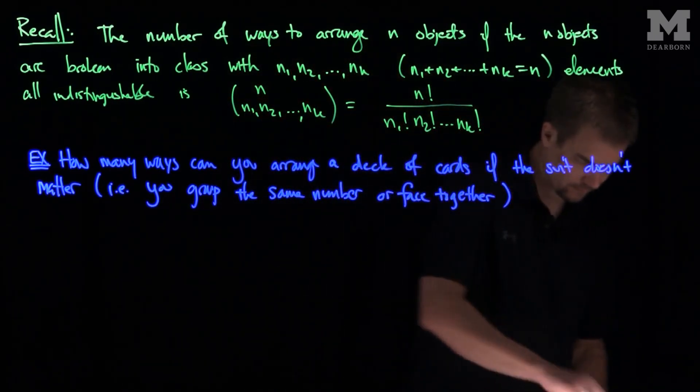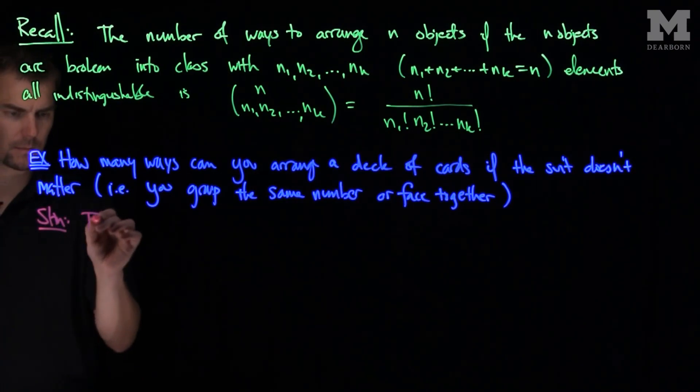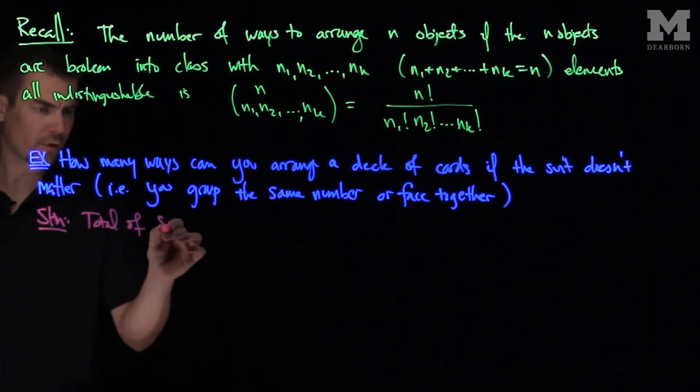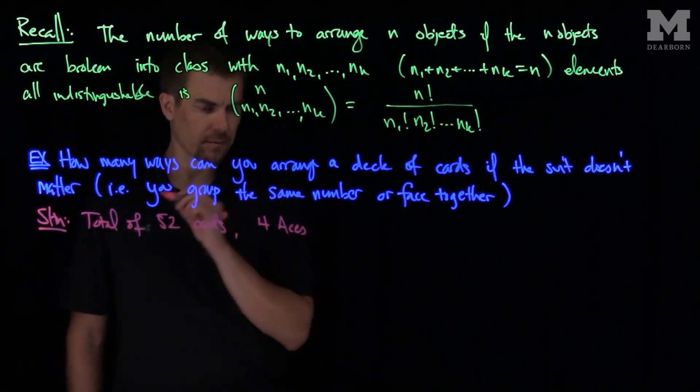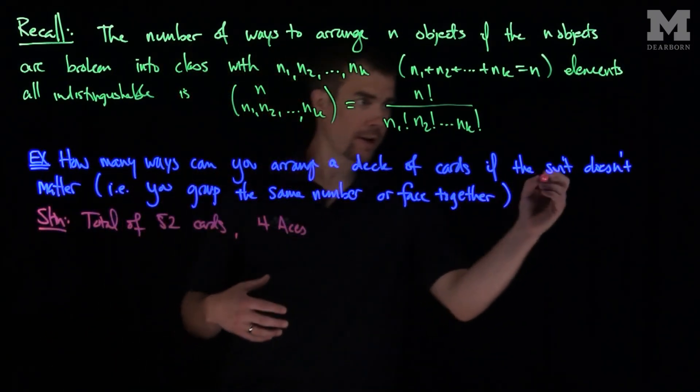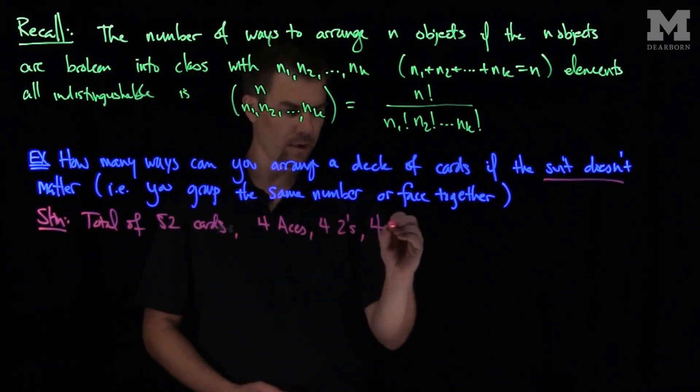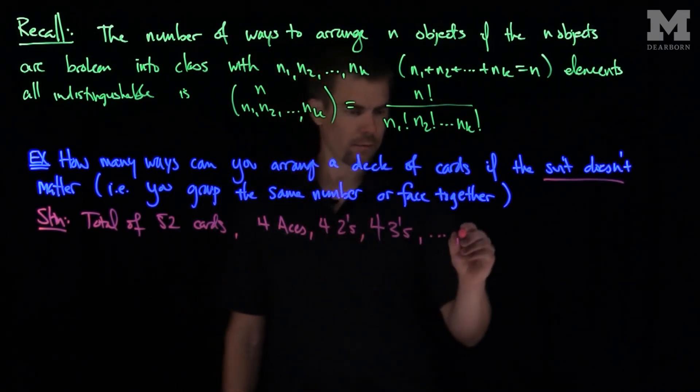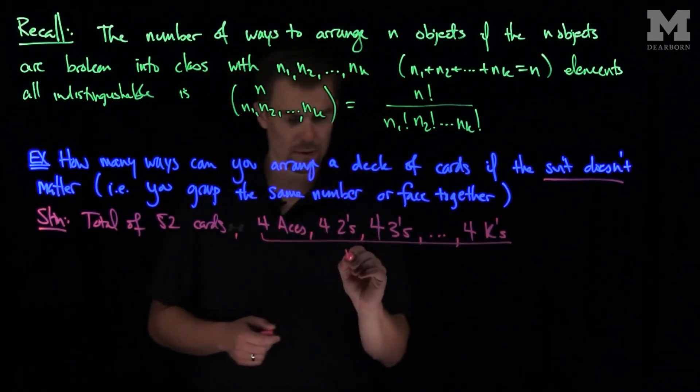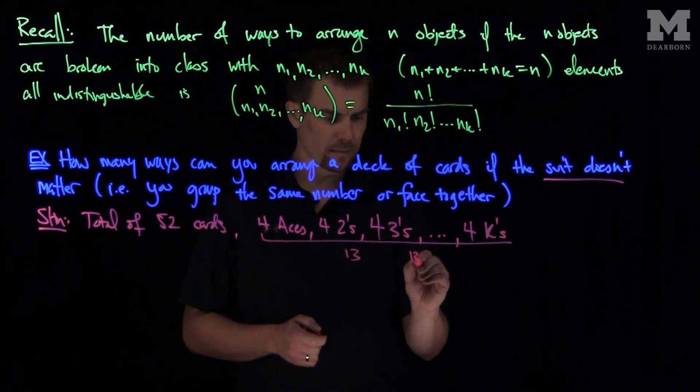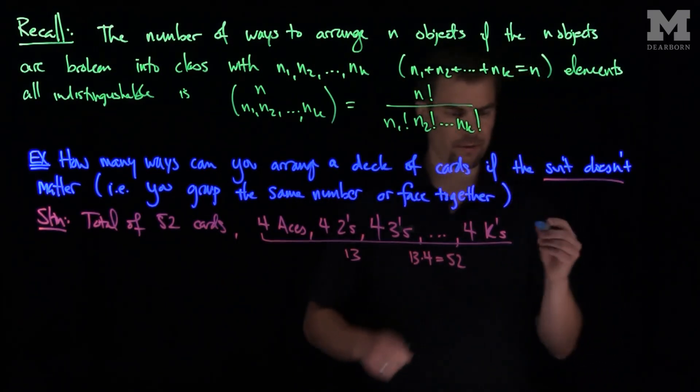So what we have is a total of 52 cards, and you have 4 aces that are all in the same class. You can't distinguish any because you don't care about the suit. You have 4 twos, 4 threes, etc., up to 4 kings. And so we see that there are 13 of these different suits, and 13 times 4 is equal to 52. So we can use this formula. There is a total of 52 factorial possibilities.